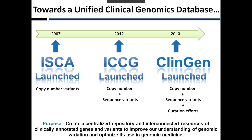Realizing that these issues were not unique to structural variants, in 2012, we expanded to include the sequence variant community and subsequently changed our name to the more inclusive International Collaboration for Clinical Genomics. In 2013, we expanded yet again, and the investigators that were a part of ICCG became partners in the ClinGen resource, with the goal of creating a centralized repository and interconnected resources of clinically annotated genes and variants to improve our understanding of genomic variation and optimize disease in genomic medicine.